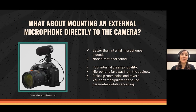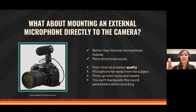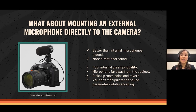What about mounting an external microphone directly to the camera, as seen in the picture? This is indeed better than using the internal microphone. A small shotgun — a directional microphone placed on the camera — works better because it captures more directional sound. However, the preamps inside the camera are still low quality, the microphone is still somewhat far from your subject, it still picks up room noise like ventilators, air conditioners, and computers, and you can't adjust sound parameters while recording without disturbing the camera.